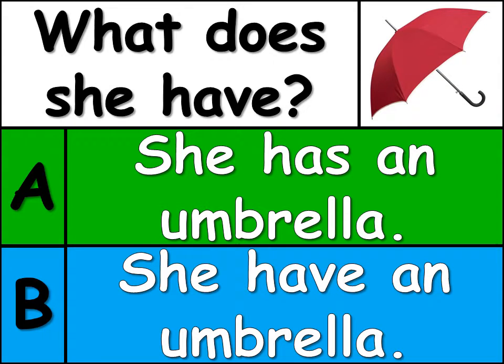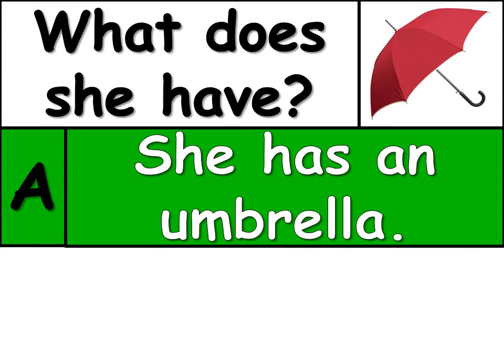Here's question number seven. What does she have? Is it A or B? The answer is A. She has an umbrella.